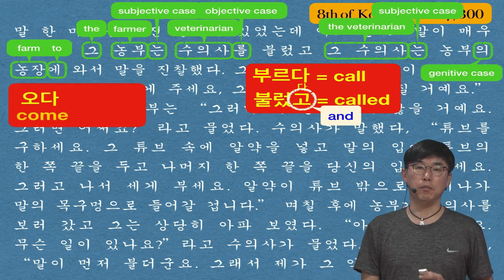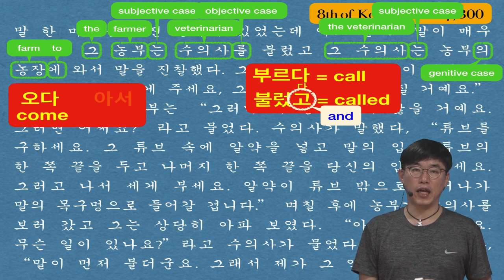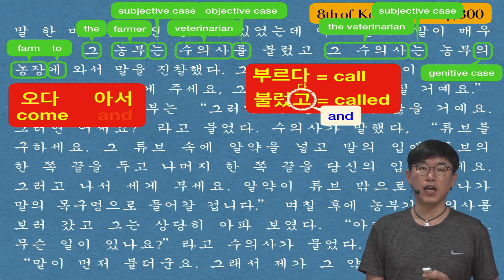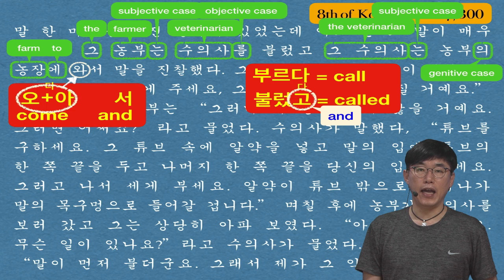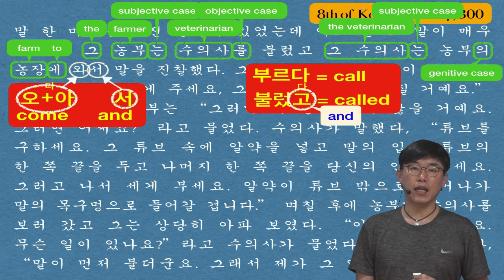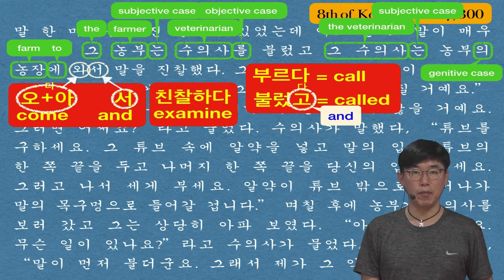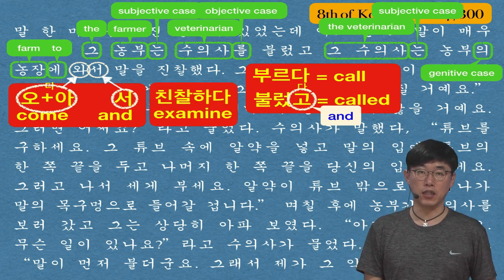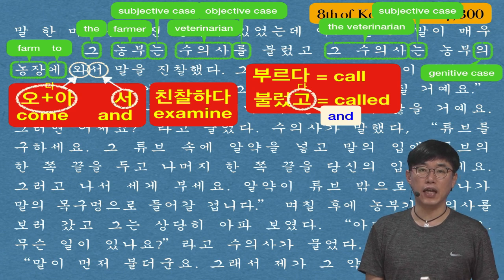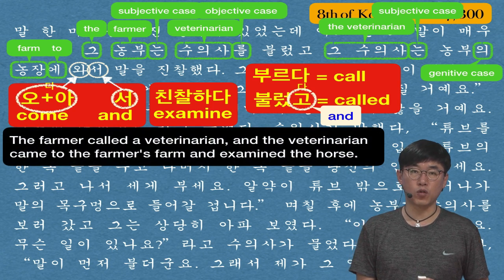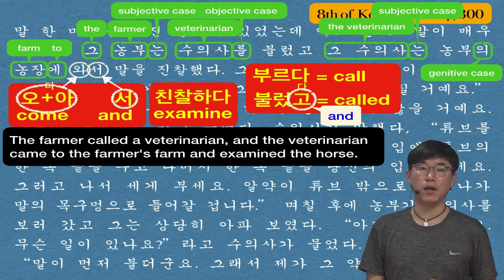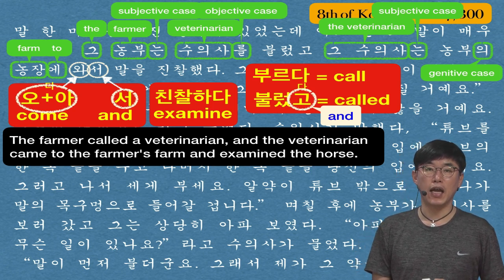와서 came from 오다 (to come) with the connecting word 아서. When 오 and 아 combine they form 와, so 오다 becomes 와서. 진찰했다 came from 진찰하다 (to examine) — 했다 is the past tense of 하다, so 진찰했다 is 'examined.' Full sentence: 그 농부는 수의사를 불렀고 그 수의사는 농부의 농장에 와서 말을 진찰했다 — The farmer called a veterinarian and the veterinarian came to the farmer's farm and examined the horse.